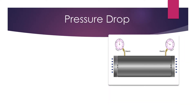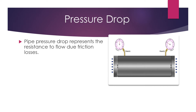Now after we talked about the velocity criteria, let's talk about the pressure drop. As the flow rate of a fluid increases, its velocity increases, which means that this shall cause more friction with the pipe. This friction represents the pipe resistance to flow. It hinders the flow of fluid and decreases its pressure.